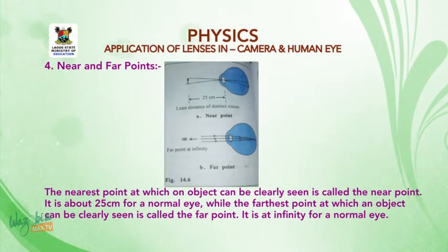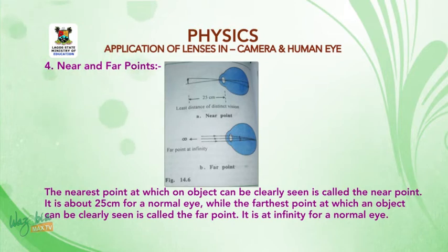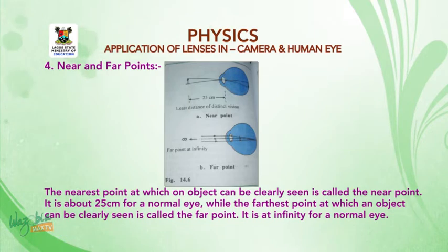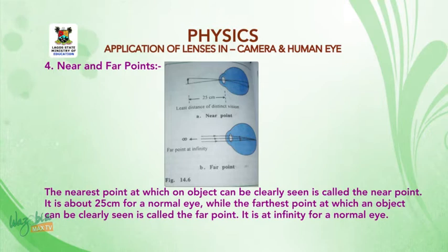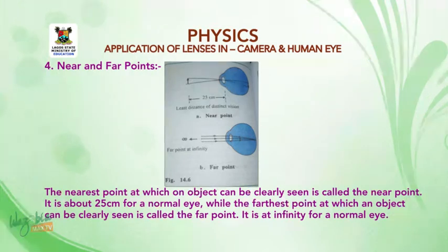Number four: near and far points. The nearest point at which an object can be clearly seen is called the near point; it is about 25 centimetres for a normal eye. The farthest point at which an object can be clearly seen is called the far point; it is at infinity for a normal eye.